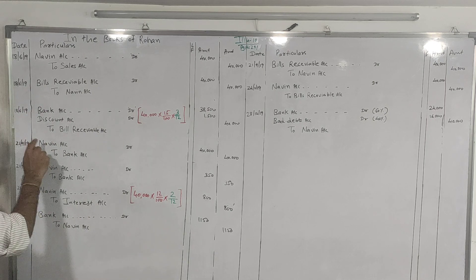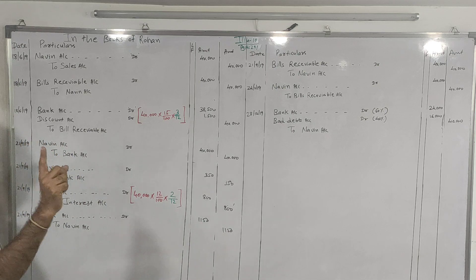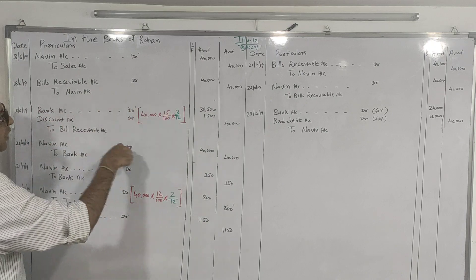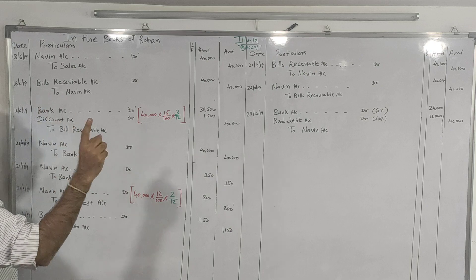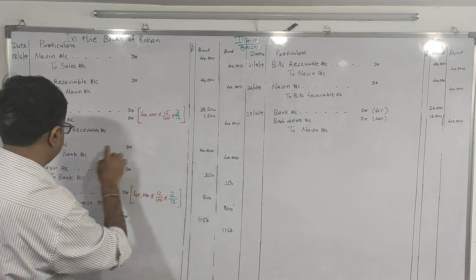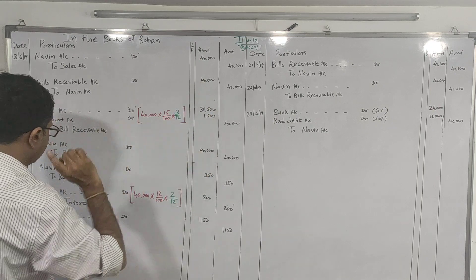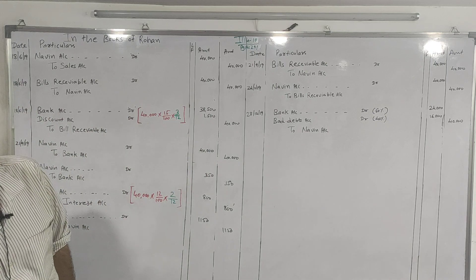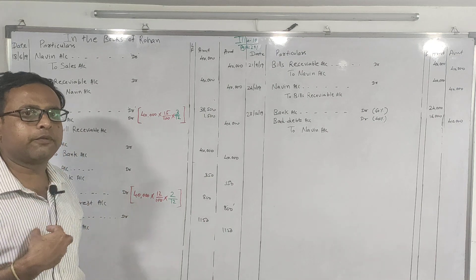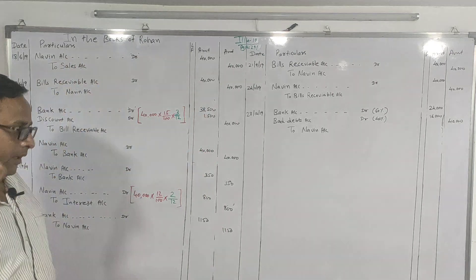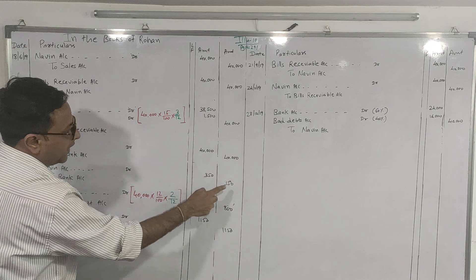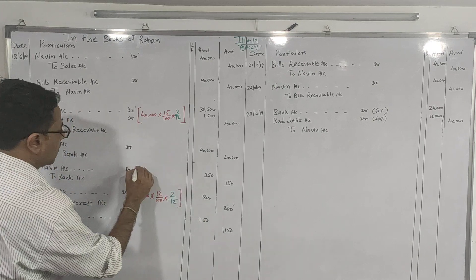Date: 21st September. For Case 2 dishonor, the entry is: Navin Dr. to Bank ₹40,000. This transaction is between the drawer and the bank and has nothing to do with a separate dishonor entry, so be careful about the amount. Bank also paid noting charges of ₹350 which the bank will recover from us, and we will recover from Navin. So on the same date: Navin Account Dr. to Bank Account ₹350.